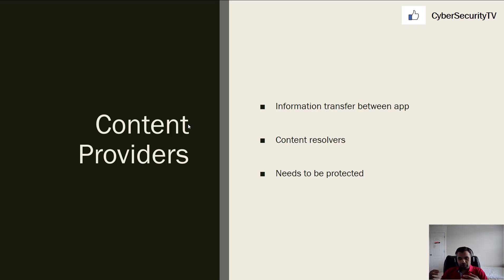What happens is, if Facebook is requesting information, Instagram has to publish a content provider so Facebook knows what information is available to request. You can think of it like an API in a web application — you have public APIs, but those still require authentication and authorization. Once Facebook is authenticated and authorized, Instagram will send the information back.